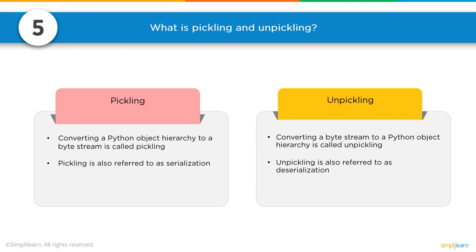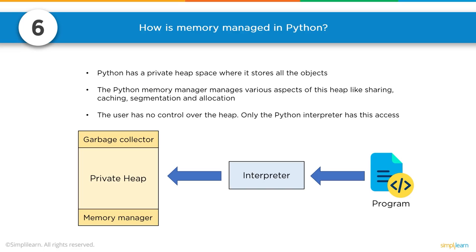Question 5: what is pickling and unpickling? Converting a Python object hierarchy to a byte stream is called pickling, also referred to as serialization. Converting a byte stream back to a Python object hierarchy is called unpickling, also referred to as deserialization. For example, you can save a trained neural network model to disk by pickling it and then unpickle it to use later. Question 6: how is memory managed in Python? Python has a private heap space where all objects are stored. The Python memory manager manages aspects like sharing, caching, segmentation, and allocation. The user has no control over the heap — only the Python interpreter has access.